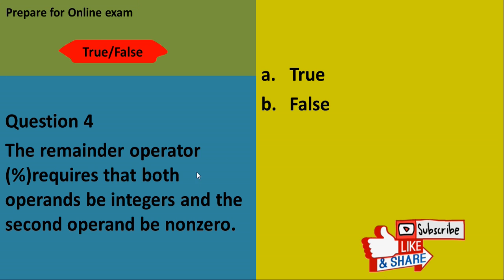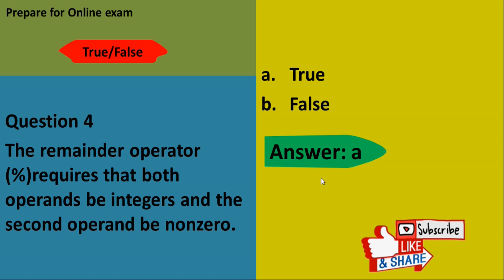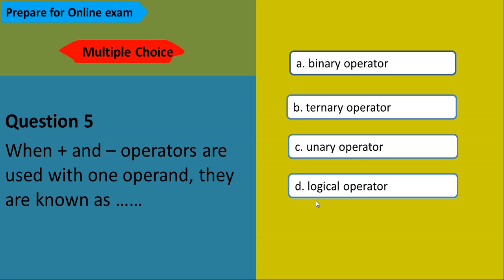Question number four: The remainder operator, or modulus operator, requires that both operands be integers and the second operand be non-zero. This condition is true, so the answer is true.